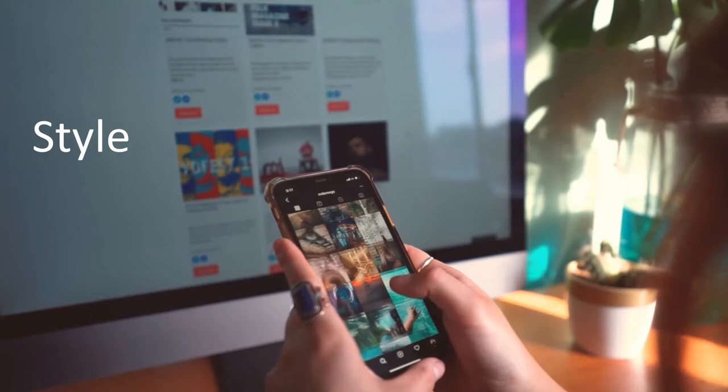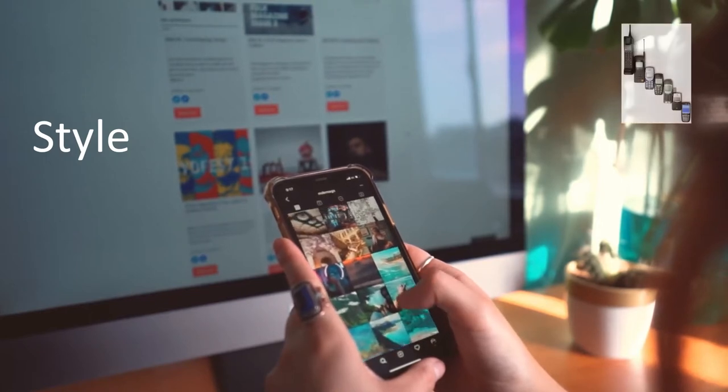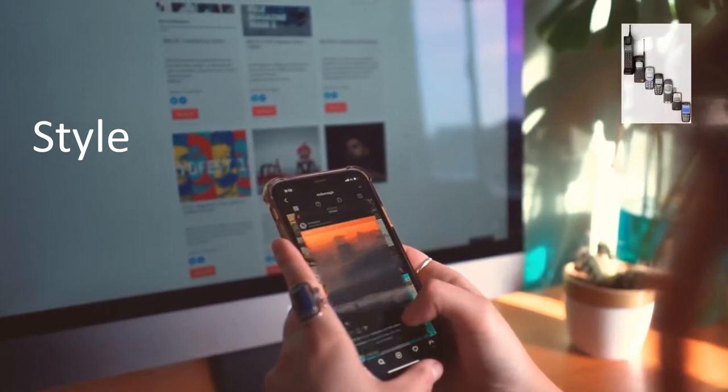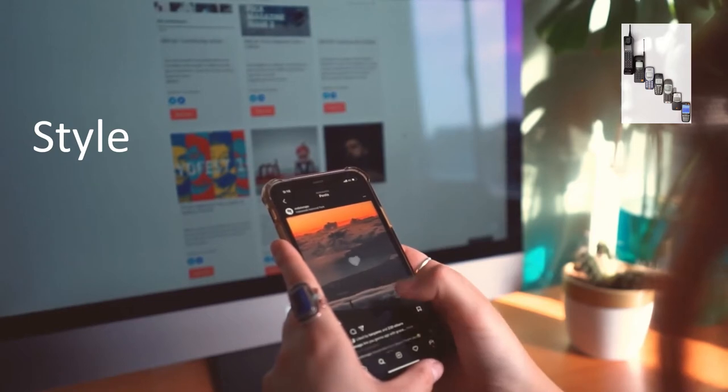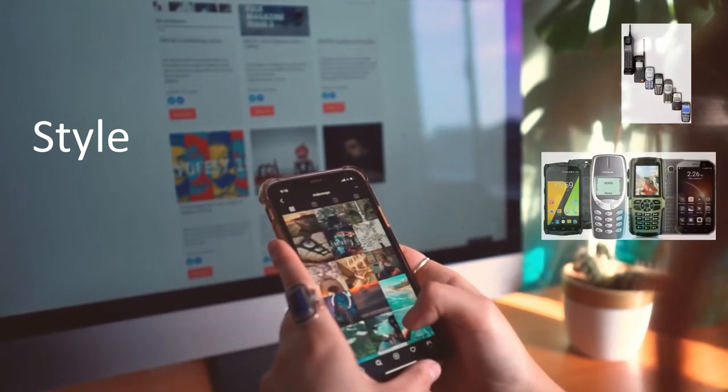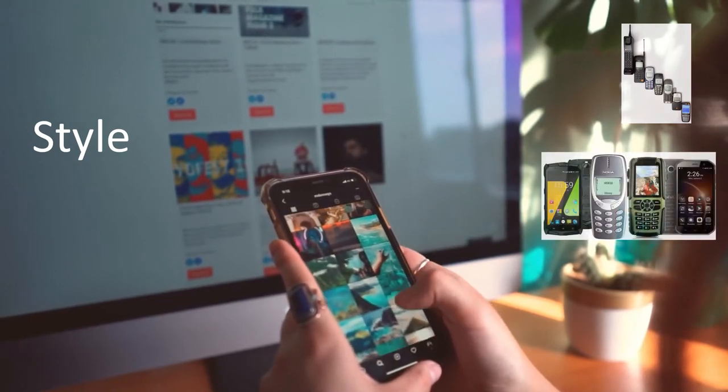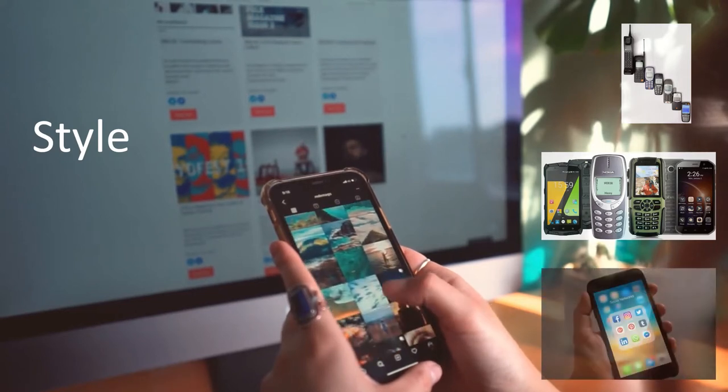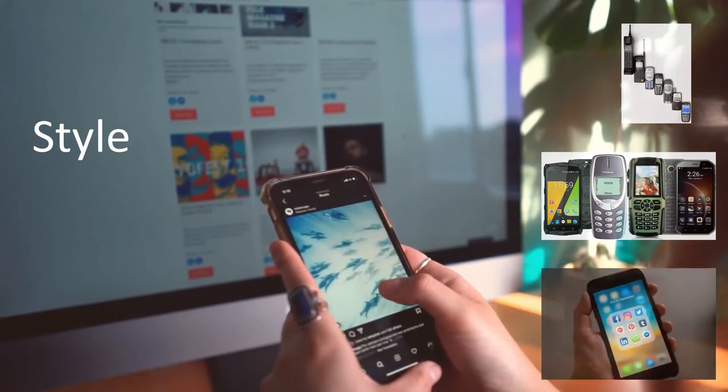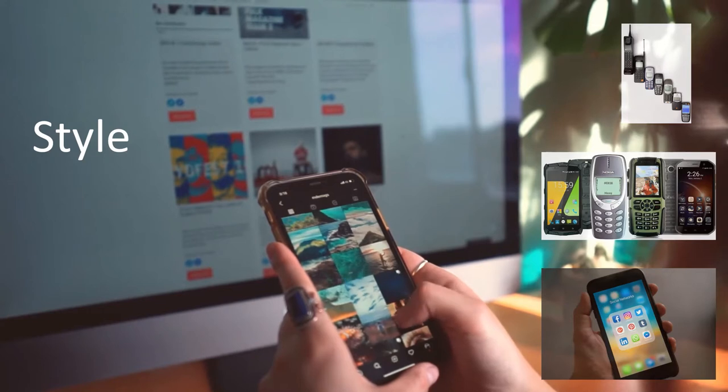A style is the manner in which a product is presented, and certain styles come and go. Once a style is invented, it can last for generations, at times going in and out of style. For example, the current style for mobile phones is touchscreen, and this style will last until a new technology style appears.